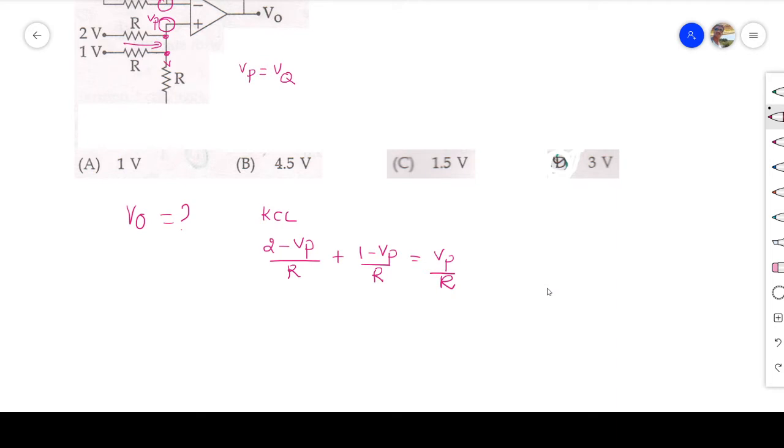Let us see what we have to do. It is coming here, it is going. If we simplify, R R R cancelled, so 2 minus V_P plus 1 minus V_P is equal to V_P. This implies V_P is equal to V_Q, so V_Q is also 1 volt.